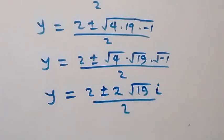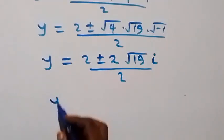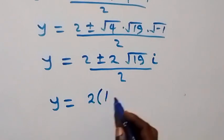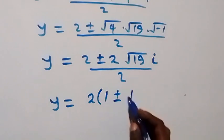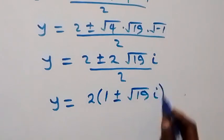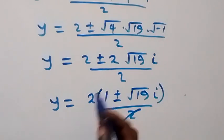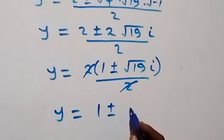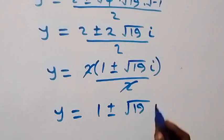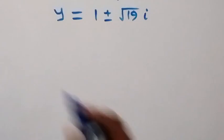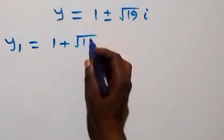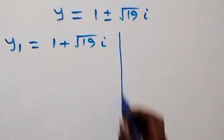Since 2 is common, we factor it: y equals to 2 times (1 plus or minus root 19 i), divided by 2. The 2s cancel, giving y equals to 1 plus or minus root 19 i. So we have two possible values: y1 equals to 1 plus root 19 i, and y2 equals to 1 minus root 19 i.